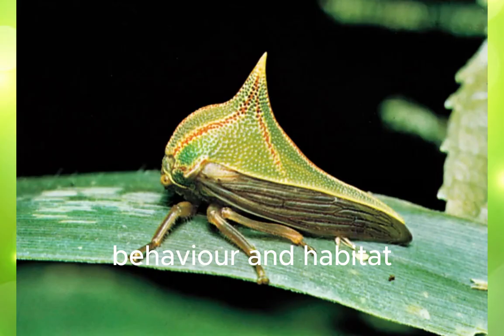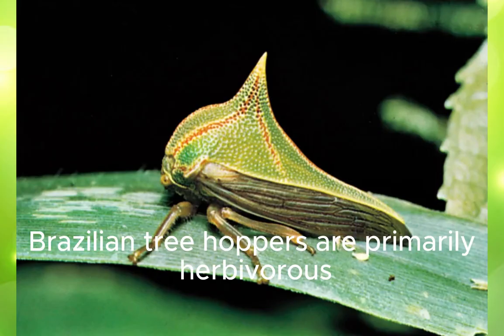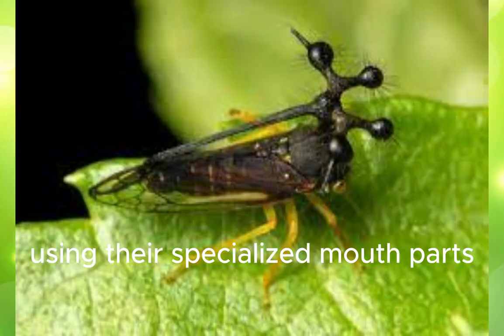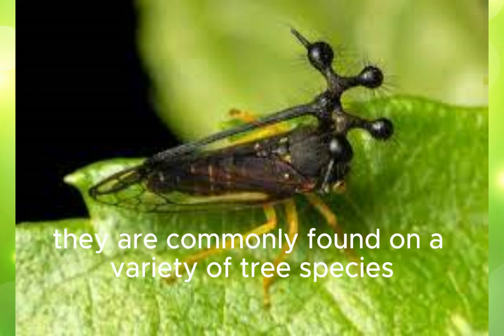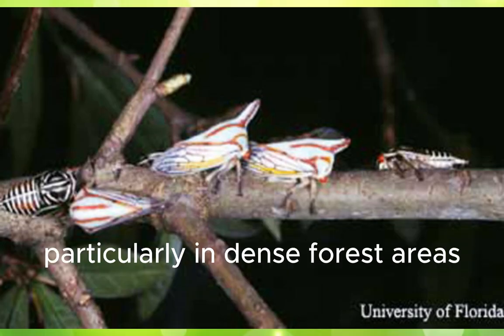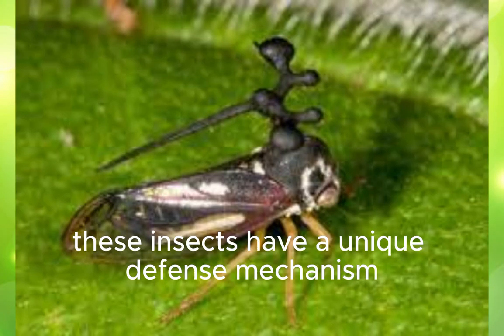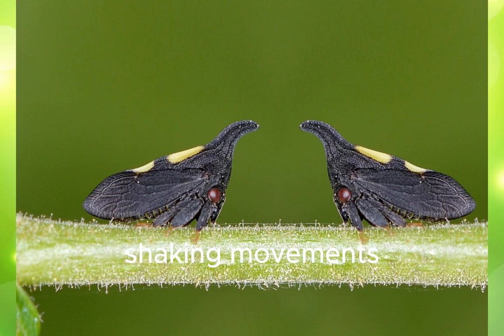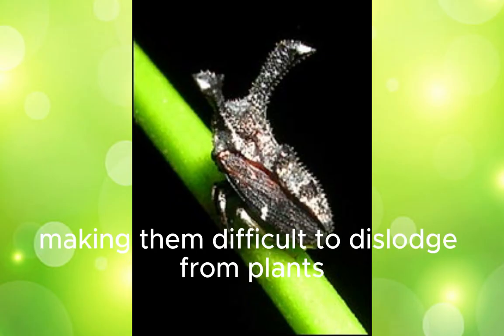Behavior and Habitat. Brazilian treehoppers are primarily herbivorous insects that feed on plant sap using their specialized mouthparts. They are commonly found on a variety of tree species, particularly in dense forest areas. These insects have a unique defense mechanism where they produce vibrational sounds and use vigorous shaking movements, making them difficult to dislodge from plants.